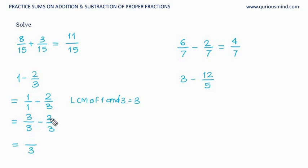Now denominators are same, so answer's denominator will remain same. Perform operation on the numerator. 3 minus 2 is 1. 1 upon 3 is the answer.